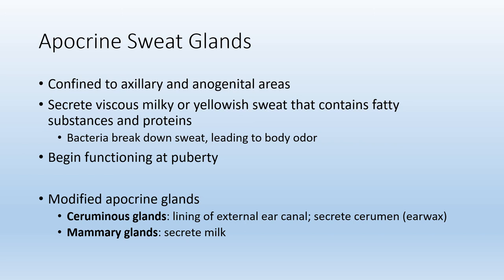Apocrine glands don't start functioning until puberty. When they do, their secretion is a milky or yellowish sweat that contains fat. Body odor comes from bacteria ingesting that fat and protein produced in that substance and breaking it down.